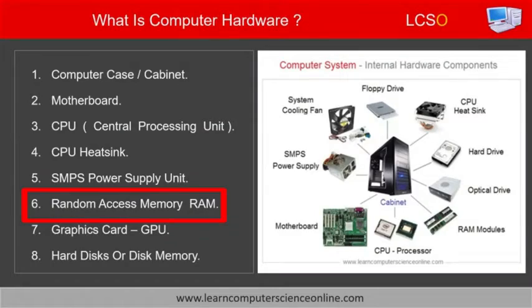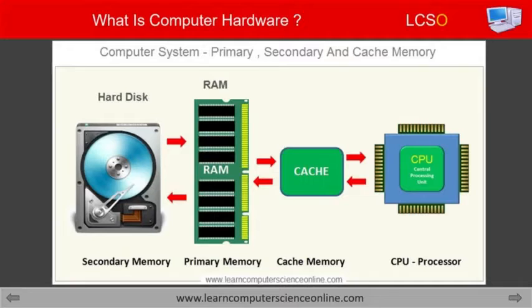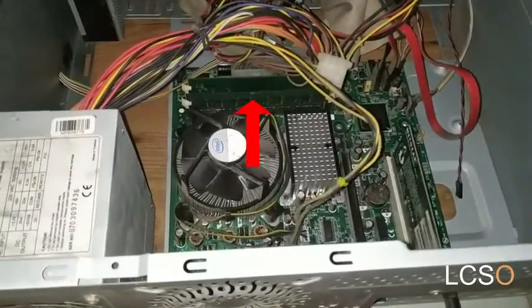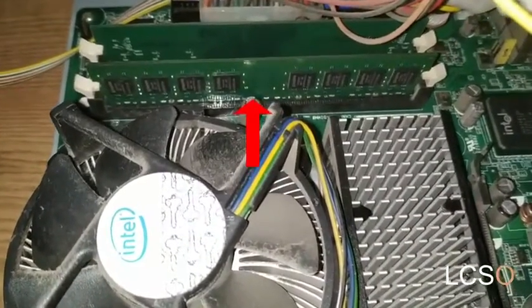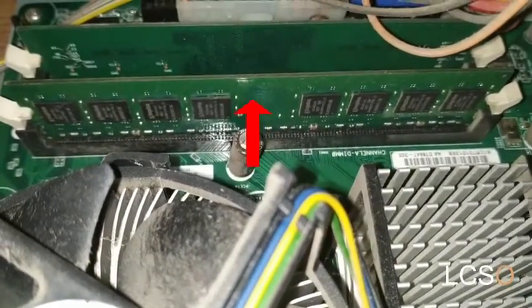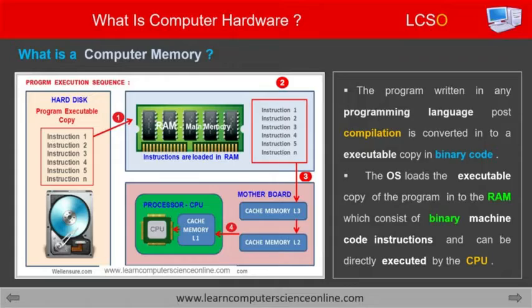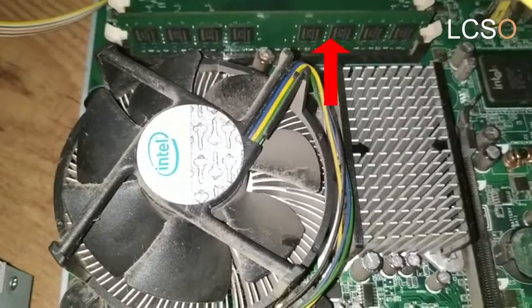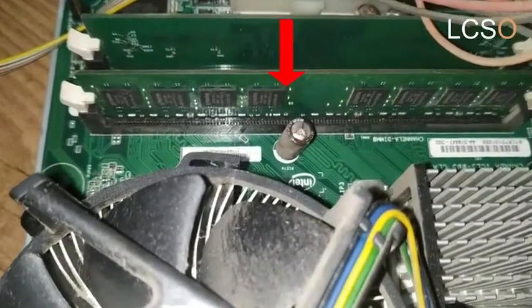The next hardware component is main memory, called random access memory or RAM. The computer system memory consists of different types of memories organized in a hierarchical order with different size and speed in order to optimize system performance. Each of these memories performs a specific role during program execution. The RAM is the main memory of the computer and is considered temporary or volatile memory, because it can only store data while the computer is powered on. RAM is a critical resource managed by the operating system, used to store data and program instructions during program execution. The main memory is present in the form of RAM modules installed on the computer motherboard, mounted into memory slots provided on the motherboard. RAM modules are also commonly referred to as DIMMs.